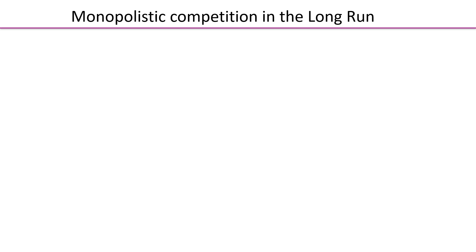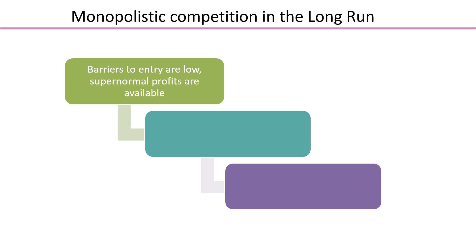So what does this mean for monopolistic competition in the long run? Let's follow through a chain of analysis. We know that barriers to entry are low and that supernormal profits are available, as shown in the first graph. Those supernormal profits will attract other firms into the industry, and it's easy for them to enter because of the low barriers, meaning supply in the industry as a whole increases.